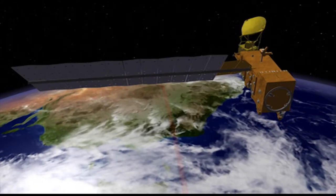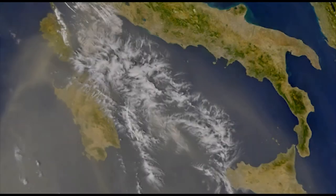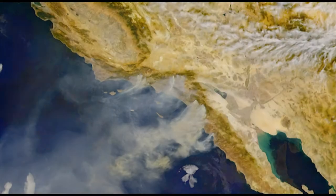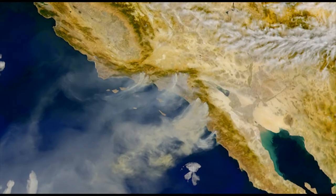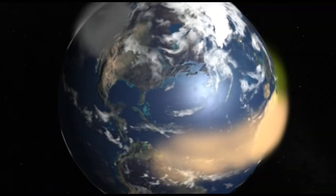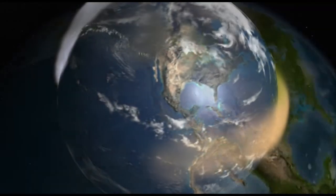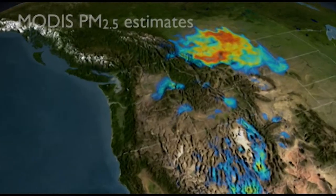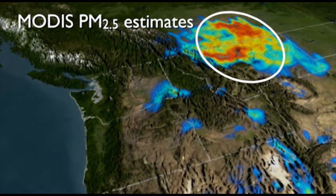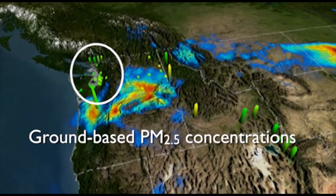MODIS acquires data across 36 spectral bands, providing a wealth of information on a wide range of land, ocean, and atmospheric variables. It's one of several instruments in orbit that can measure aerosol optical depth, a parameter that allows us to estimate particle concentrations in the atmosphere. More details on aerosol optical depth are provided in the video discussing the methodology for estimating ground-level particle pollution, or PM2.5 concentrations.